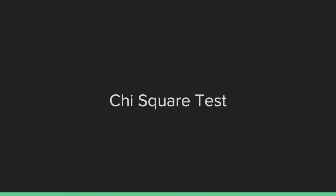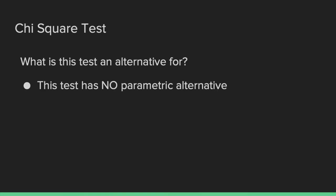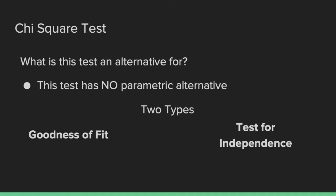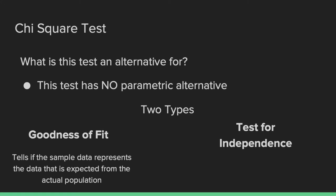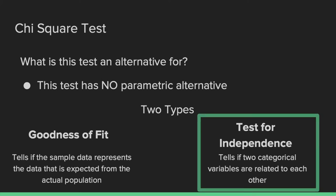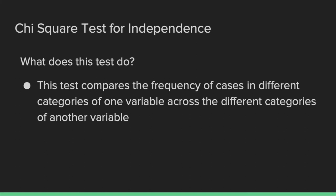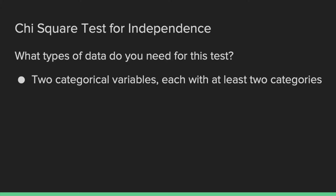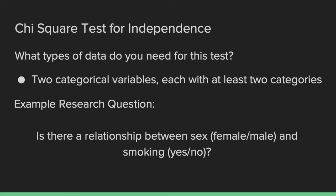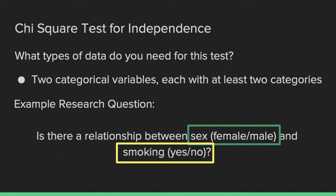First on our list of six is the chi-square test. The chi-square test has no parametric alternative, and there are two different types: the goodness of fit test and the test for independence. The goodness of fit test tells us if the sample data represents what we would expect from the actual population, whereas the test for independence tells us if two categorical variables are related to each other. The test for independence is much more widely used, and this will be the type we will be focusing on today. A chi-square test for independence compares the frequency of cases in different categories from one variable across the different categories of another variable, so this test needs two categorical variables each with at least two categories. Our example research question is: is there a relationship between sex and smoking? We have two categorical variables, both with two categories each — a classic two-by-two setup.